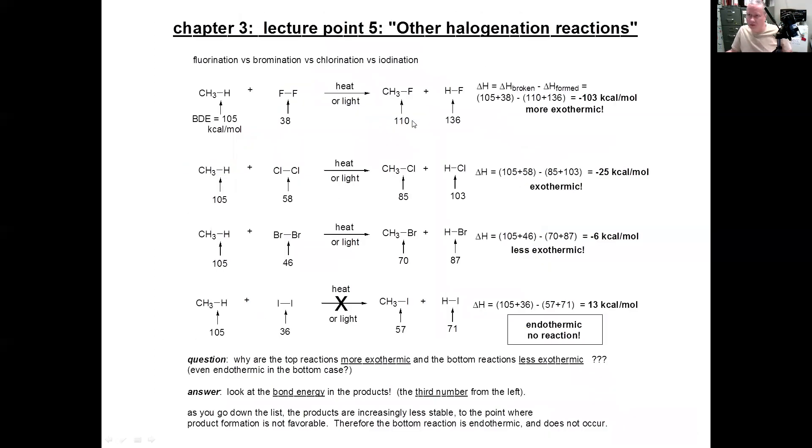Alright. So we have one more little thing to think about. This is lecture point five. We were just on lecture point four—the mechanism was lecture point four. And this is called other halogenation reactions. There's a lot of stuff here, so we'll step through this really slowly. Don't get too scared.